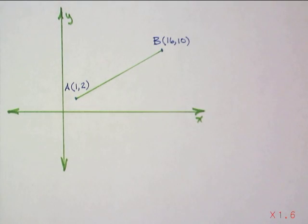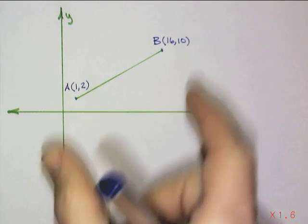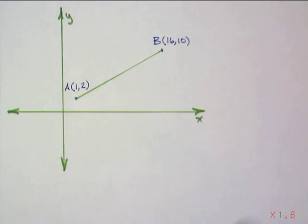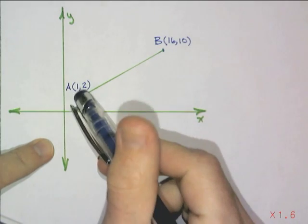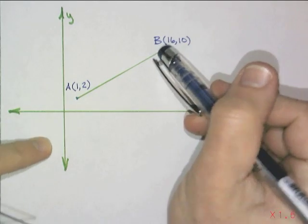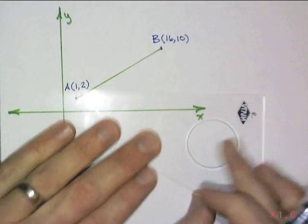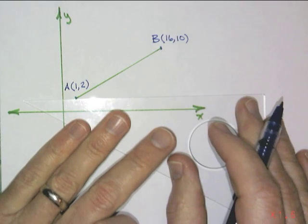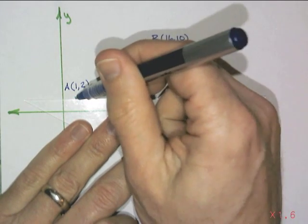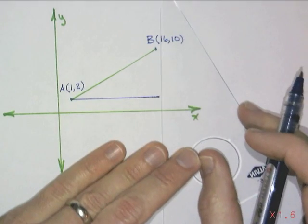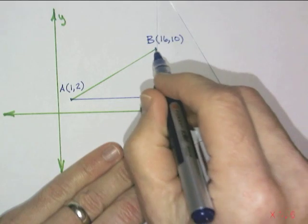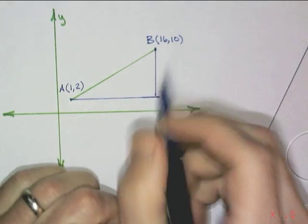And you might recall the easiest way to find a distance between any two given points is to basically make your slope triangle and make the distance that you want the hypotenuse. So, let's just do that. Let's make a slope triangle that goes from A to B. And of course, that has to be a right triangle.